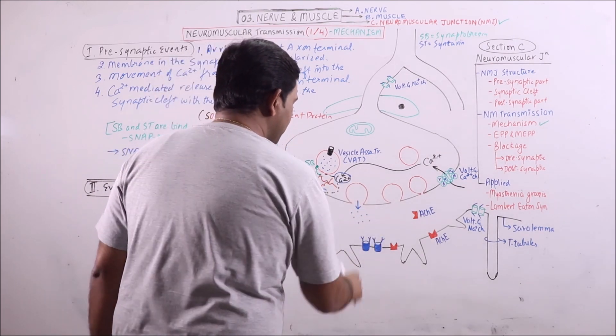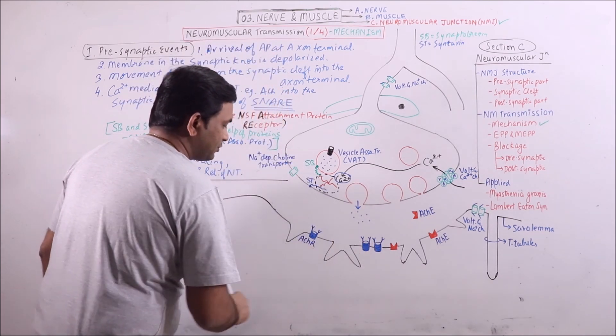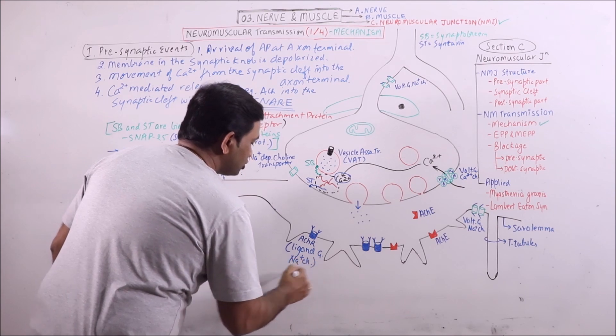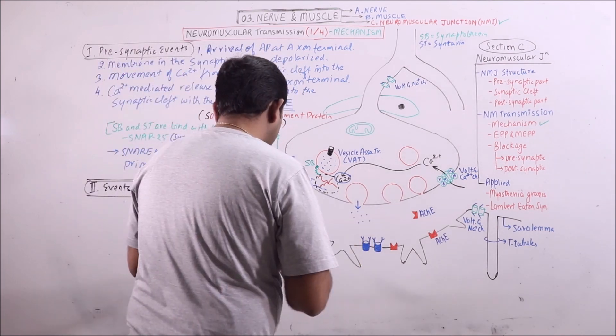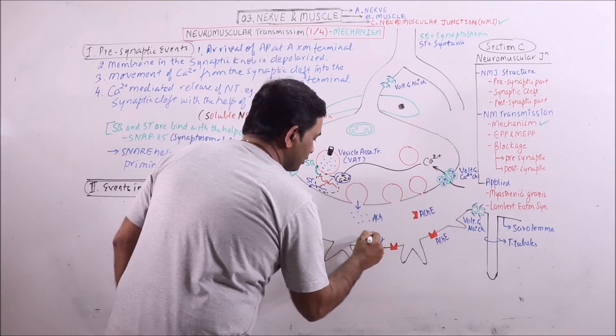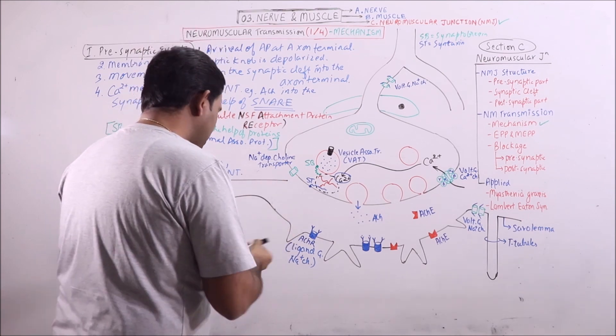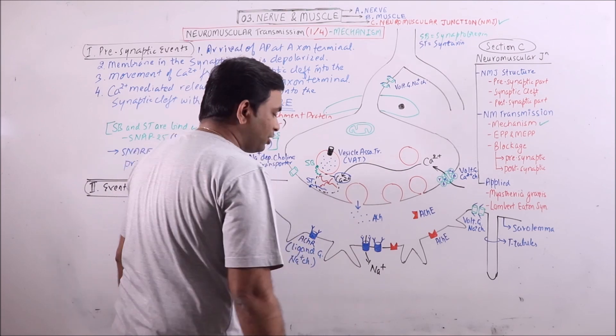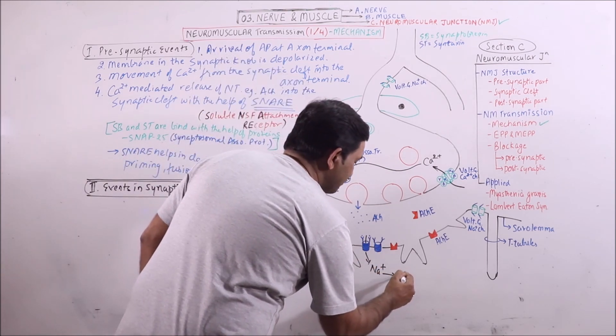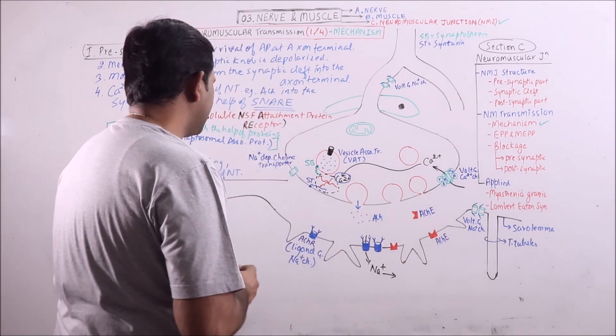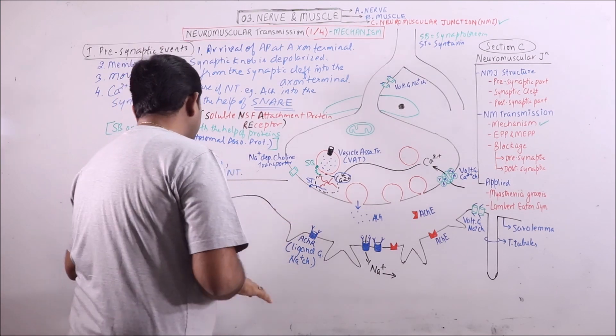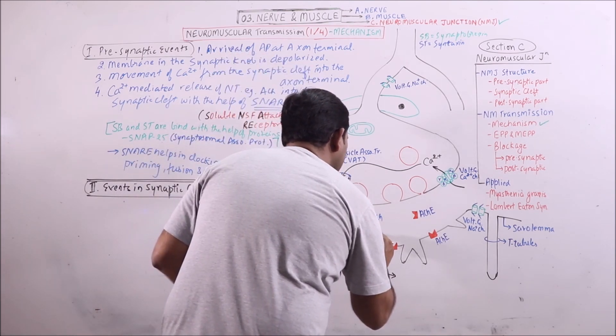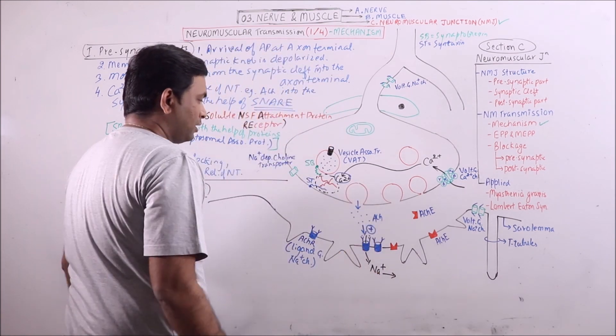Acetylcholine molecules will combine with ACHR, acetylcholine receptors. These are basically ligand gated sodium channels. These will show conformational change when two molecules of acetylcholine combine with each ACHR, and as this shows conformational change, sodium will enter. More ACHR involved means more sodium will enter, eventually resulting in depolarization.